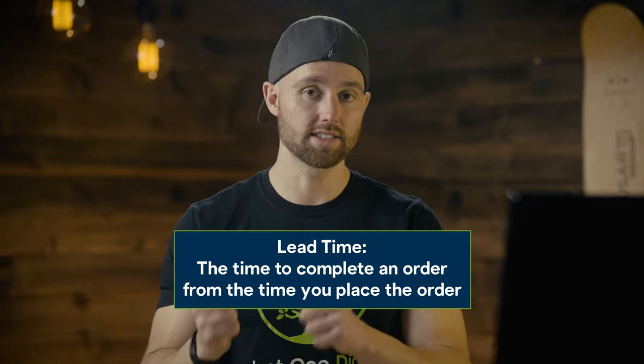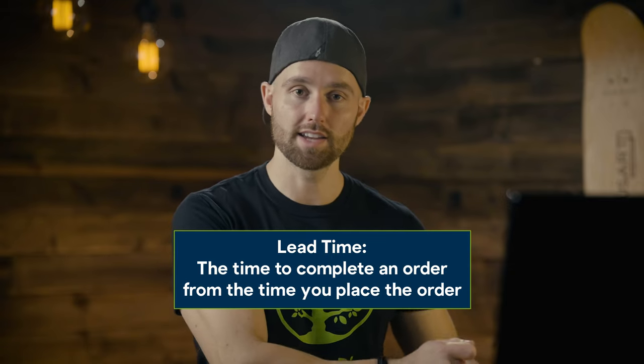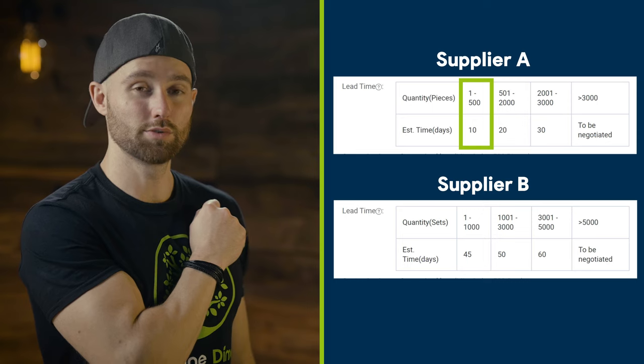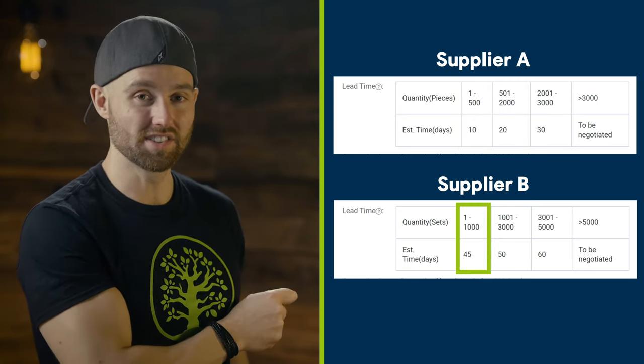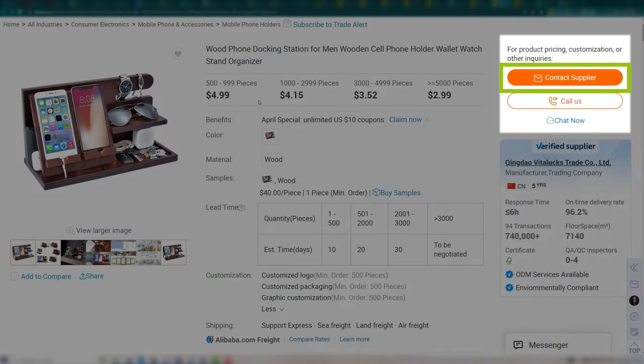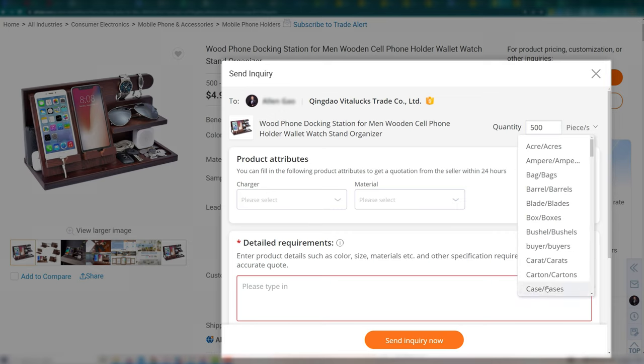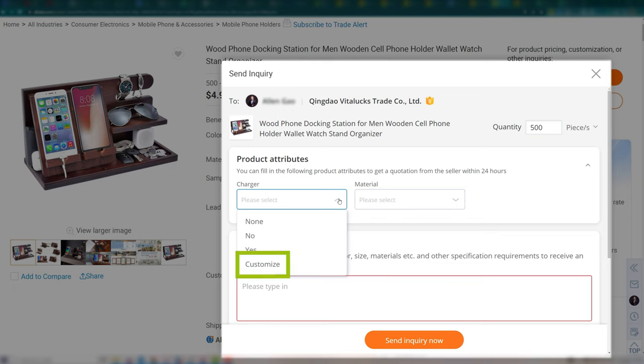Step four is to contact suppliers. With your estimated costs and lead times in mind, contact your top five suppliers. Click contact supplier on the right-hand side of the listing — an inquiry box will open. Ensure the quantity you want to order is set accurately, then select from any applicable dropdowns. You can also select customize if you're unsure. Enter the detailed requirements of your product using simple language.